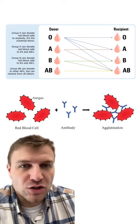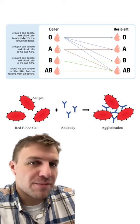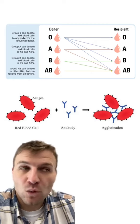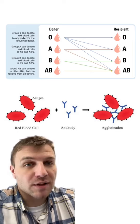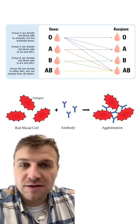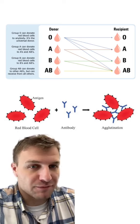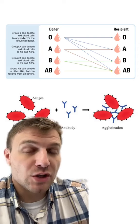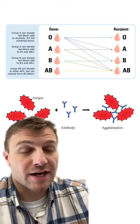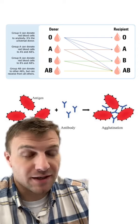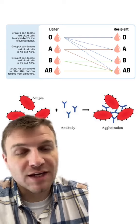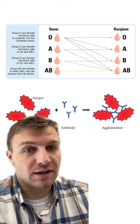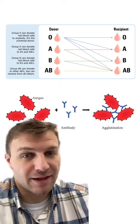You can see in our chart here at the top that O blood can donate to any type of blood, while AB blood can receive from any type of blood. If you have A blood, you can donate to somebody who has A or AB. If you have B blood, you can donate to somebody who has B or AB.